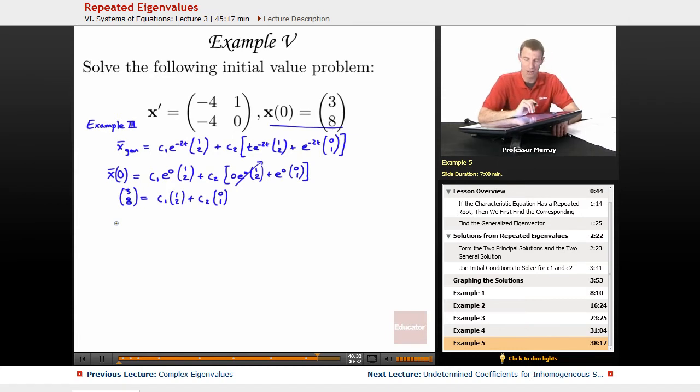So, I can expand this out into two equations if I distribute the c's into the vectors. It looks like I've got c1 plus 0 c2 is equal to 3. And 2 c1 plus c2 plus 1 c2 is equal to 8. Well, right away I can figure out that c1 is equal to 3. And if I plug in 3 there, I've got 6 plus c2 is equal to 8. So, c2 would have to be 2.